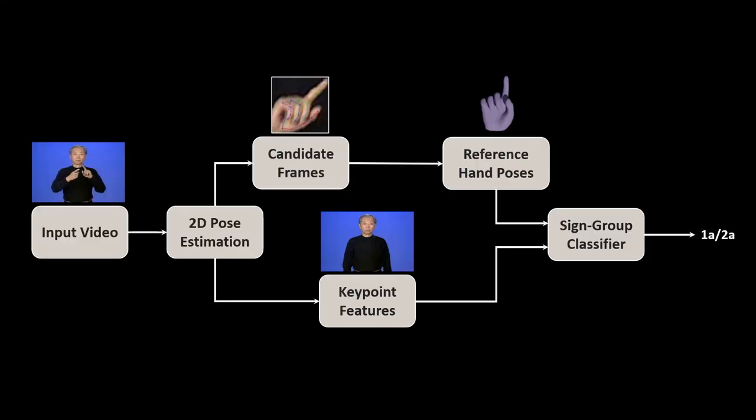To work automatically, Signify needs to know the class of the sign. We fit a simple decision tree that takes 2D and 3D pose features and produces a sign group label. We found that our interpretable model was able to generalize much better to new datasets than traditional convolutional methods.